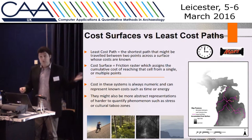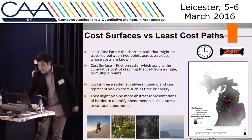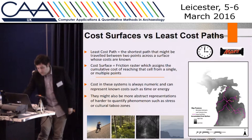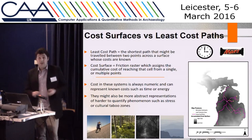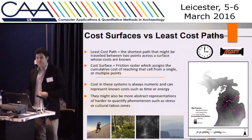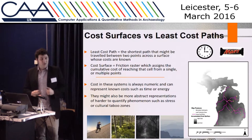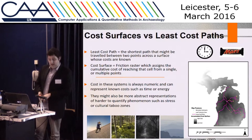A least cost path consists of those long squiggly lines between two points, sometimes networked between lots of nodes. What these use is a friction surface or cost surface — that black and white gray map in the background — which defines how much energy or cost is required to travel between cells. These costs can be known values like time or energy, or more abstract concepts like stress or visibility. I'm going to be focusing on time and energy.